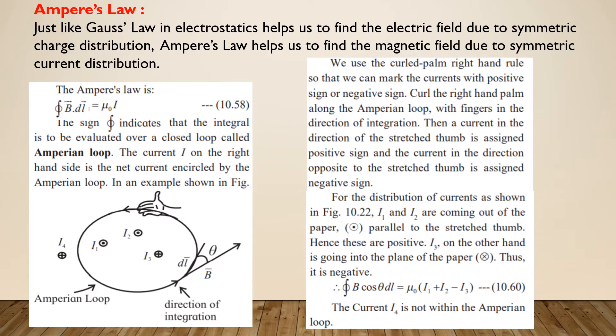In order to apply Ampere's law and to determine the magnetic field due to this system of current elements, we need to mark them with positive or negative sign. The curled right hand palm is used for that. If the fingers of the right hand are curled in the direction of integration, then the current in the direction of stretched thumb is assigned positive sign, while the current in the opposite direction is assigned negative sign.